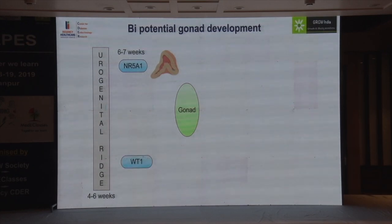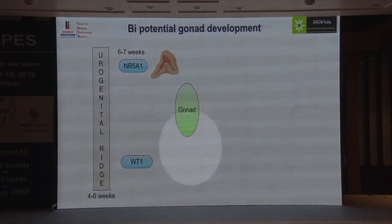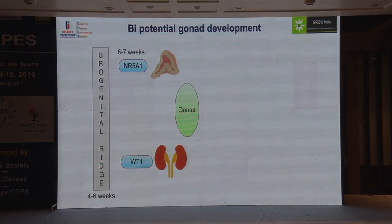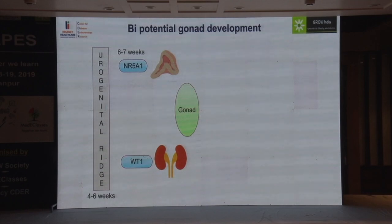The second important player in the development of the bi-potential gonad is WT1, which also plays an important role in the development of kidneys. So if you have a gonad problem, look at the kidneys and adrenals.